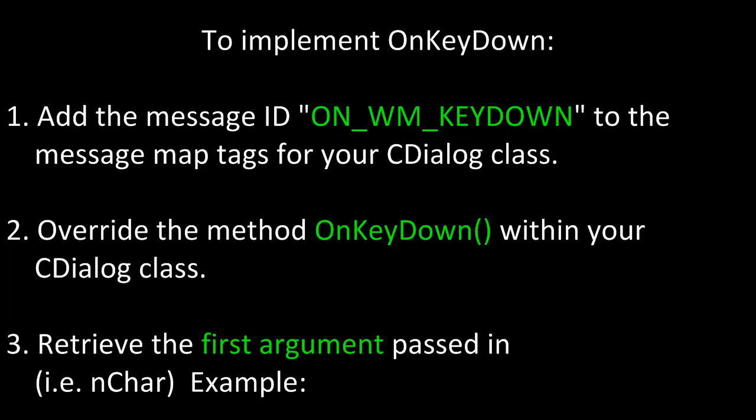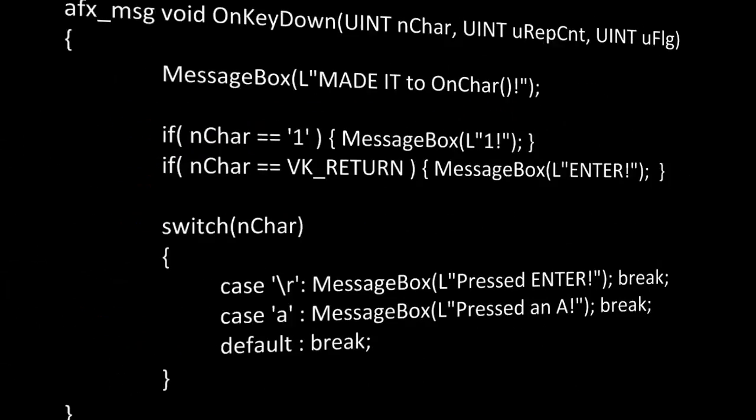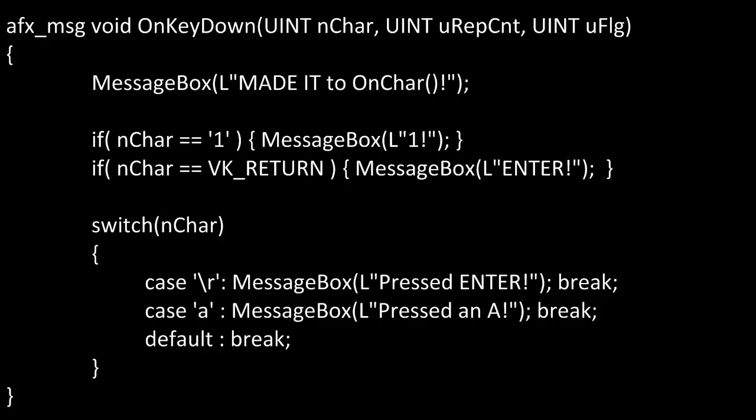To implement OnKeyDown: first, add the message ID ON_WM_KEYDOWN to the message map tags for your CDialog class. Second, override the method OnKeyDown within your CDialog class. Third, retrieve the first argument passed in, the nChar parameter. Here we have an implementation of OnKeyDown — in the function definition we're firing off a message box when the event is triggered, using nChar to determine what was pressed and acting on it with both an if and a switch statement.